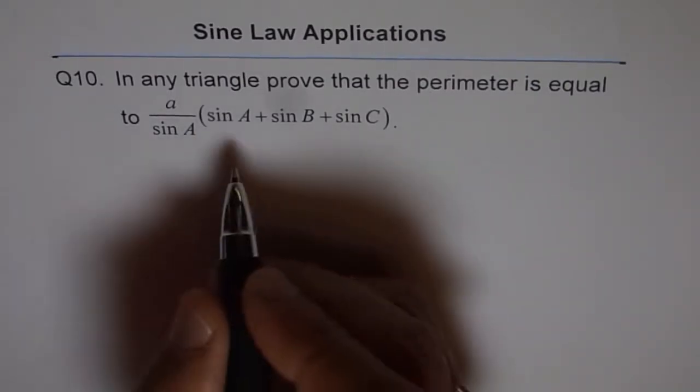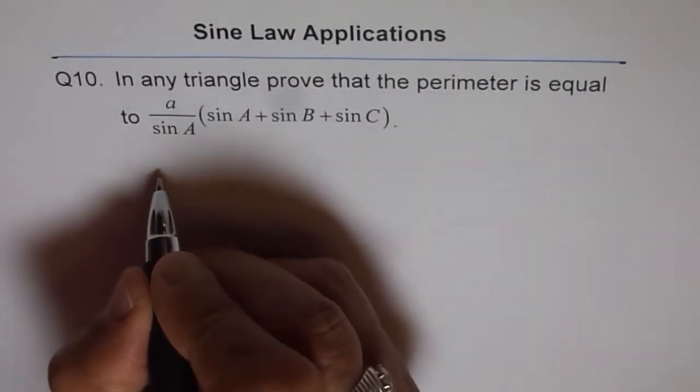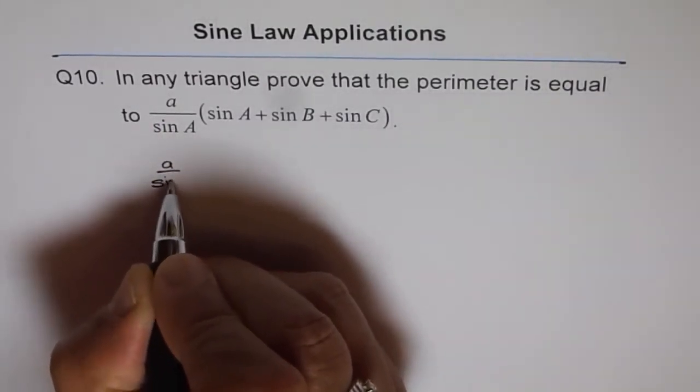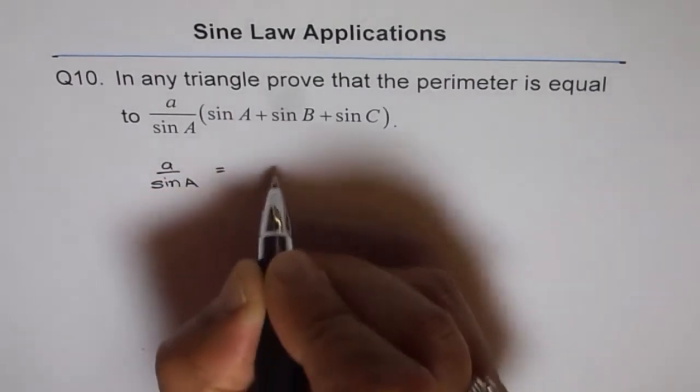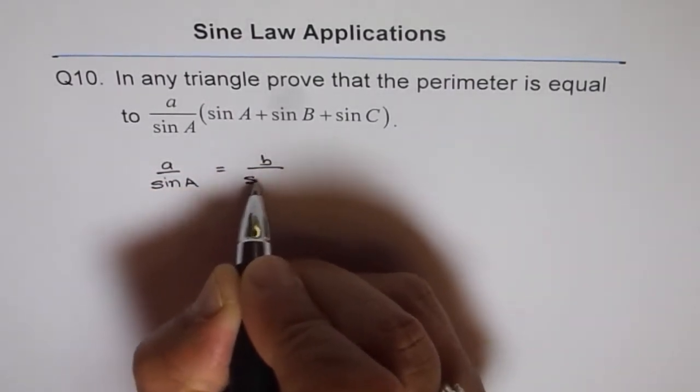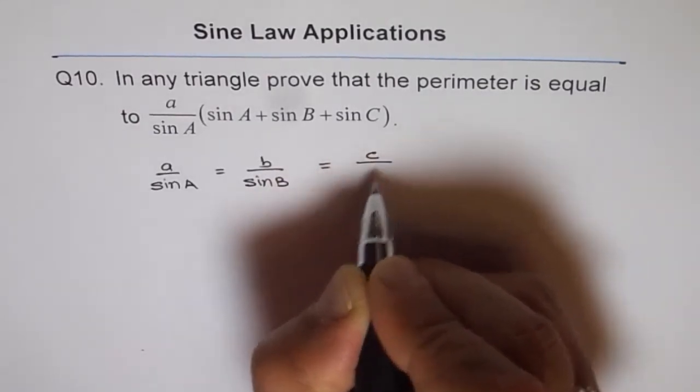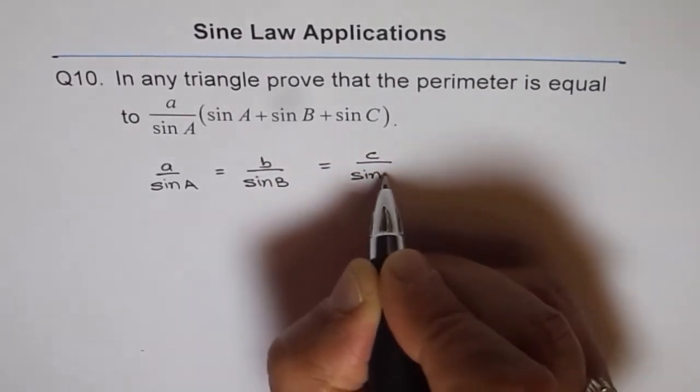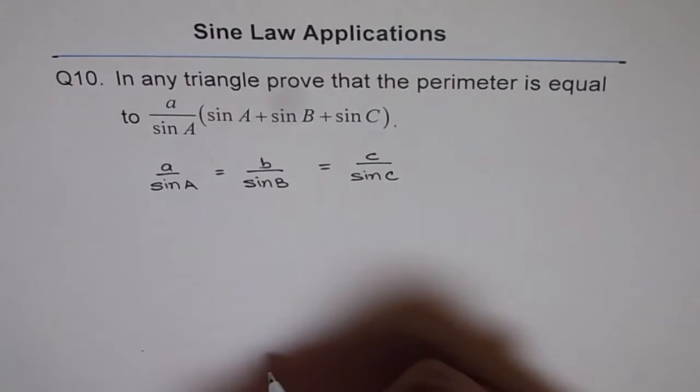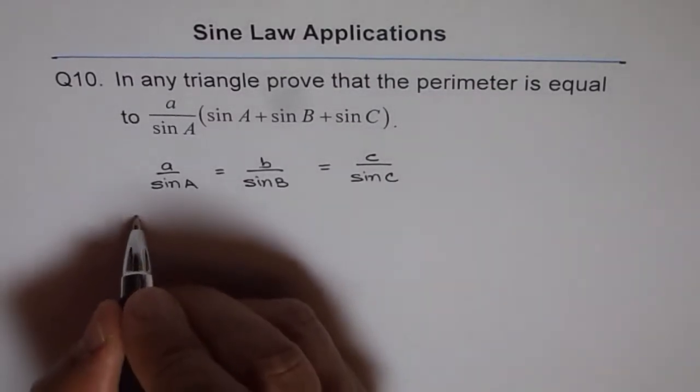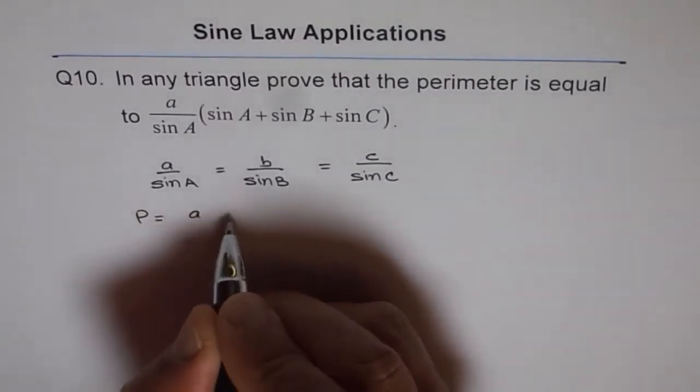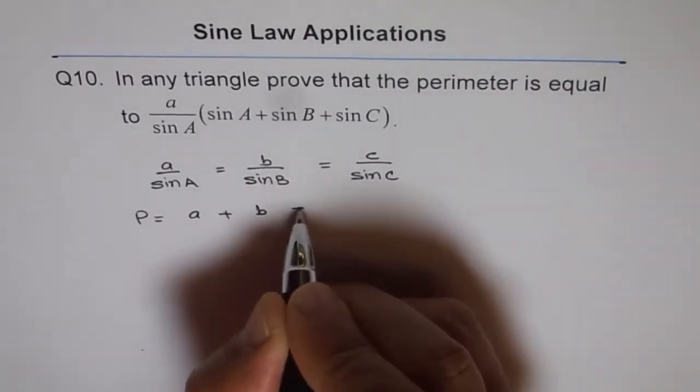In any triangle, you know sine law, which is a over sine A equals b over sine B, which equals c over sine C. Now, what is perimeter? Perimeter is equal to a plus b plus c.